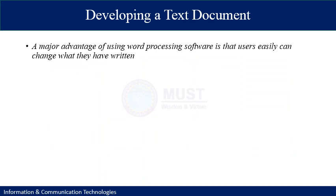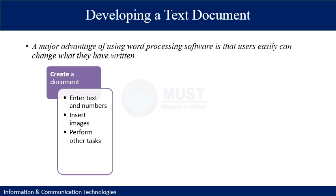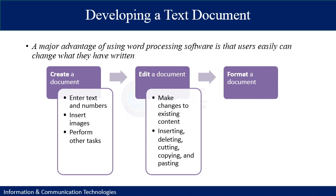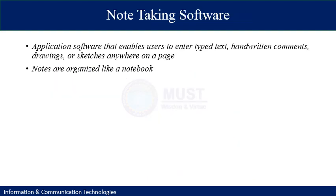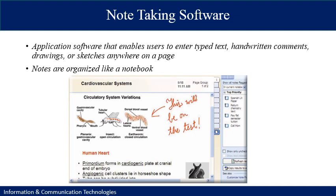A major advantage of using word processing software is that the user can easily change what they have written. You can create a document, edit it to make changes to existing content and insert new content, and finally format the document. There is also notepad or note-taking software — application software that enables users to enter typed text, handwritten comments, drawings, or sketches anywhere on the page. Notes are organized like a notebook in the system.